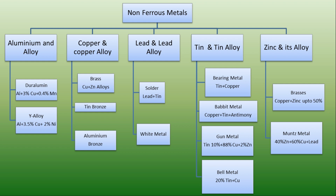Next, copper and its alloys. Copper is very malleable, ductile, and a good conductor of heat and electricity. Depending upon the alloying element, they are classified as brass, tin bronze, and aluminium bronze. Brasses generally contain zinc and they are used in making tubes. Tin bronze is used in making hydraulic parts, while aluminium bronze is generally used in making pumps and hydraulic valves.